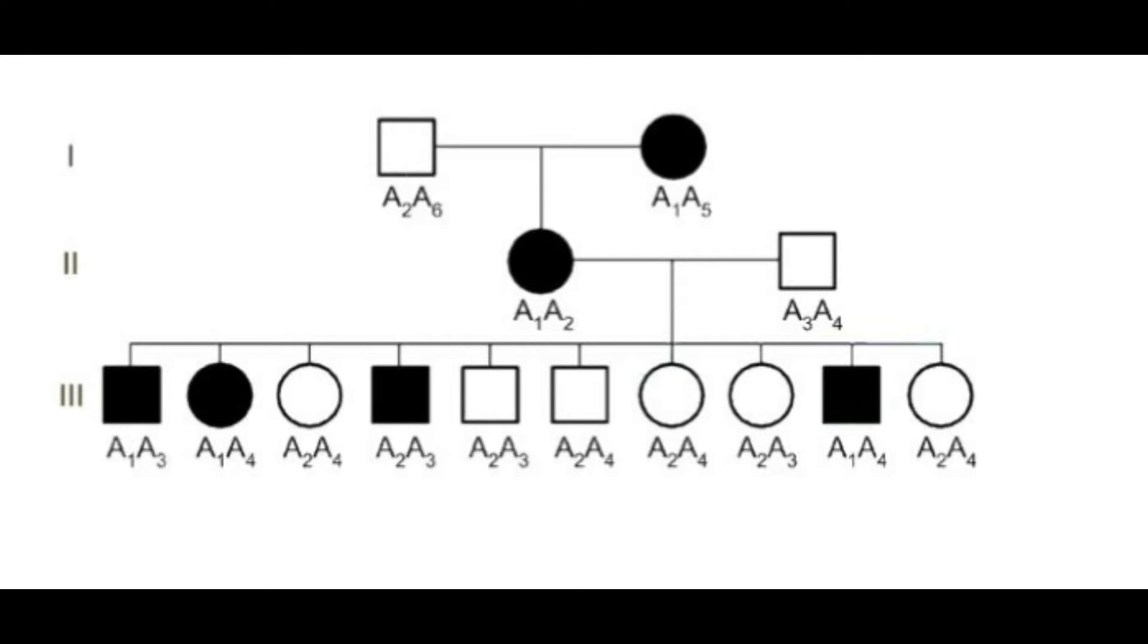Basically, in the first generation we can see the genotypes a2a6 and a1a5. We see that the black colored one is a1a5. Now if we look at generation 2, the a1a2 genotype, which is a direct child of a2a6 and a1a5, carries the allele a1. So we can say that a1 was the one that caused the disease. Similarly, we create generation 3.